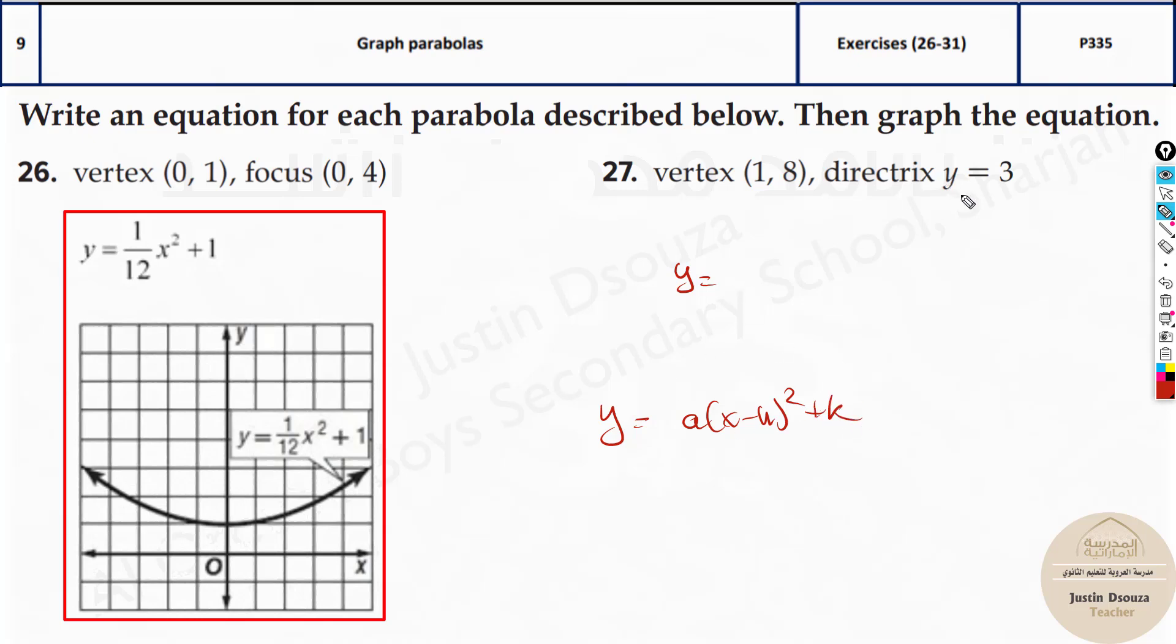If directrix was x then the standard form would be x is equal to a into y minus k. This would be the formula. The other one we will see in the next problems. Now for this one let's write the formula. The formula is k minus 1 by 4a. What is this k value? h k from the vertex. They have given that. Now all you do is substitute over here.